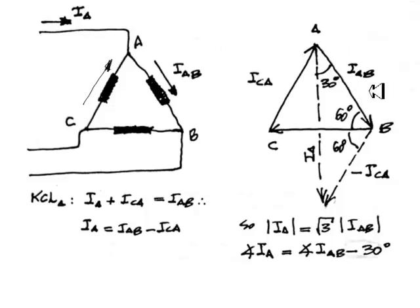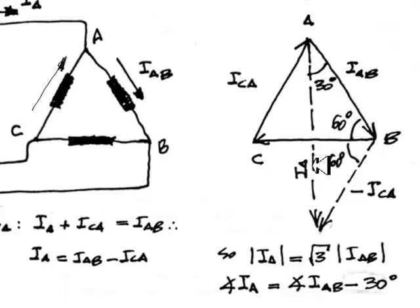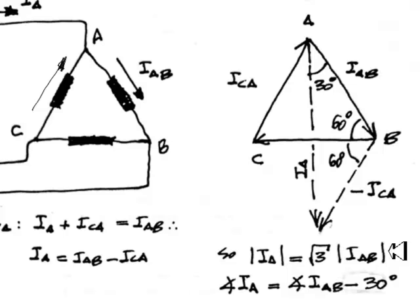In other words, this current IAB plus the negative of ICA, drawn down here. We add those two phasors together and we get the line current IA. So IA, as seen in class, for a delta-connected load is root 3 times the current inside the delta in each one of the branches in RMS magnitude. And the phase of IA is 30 degrees less than the phase of the current flowing from A to B.